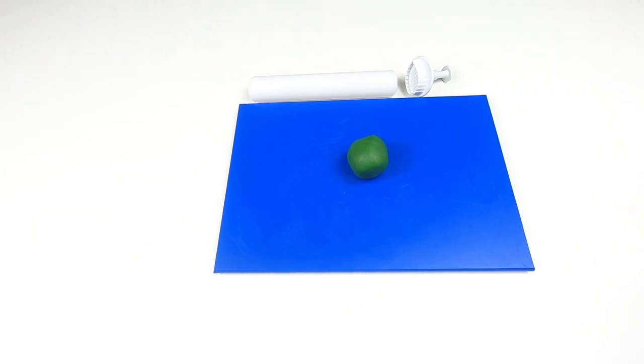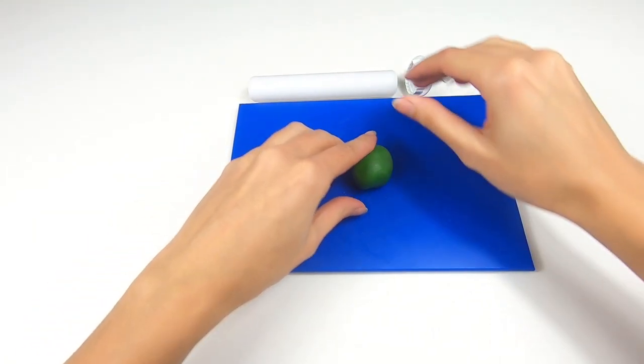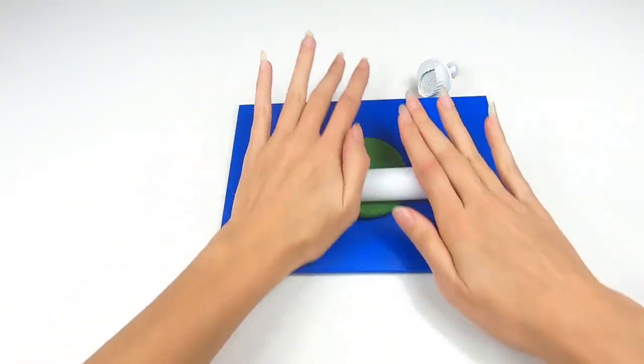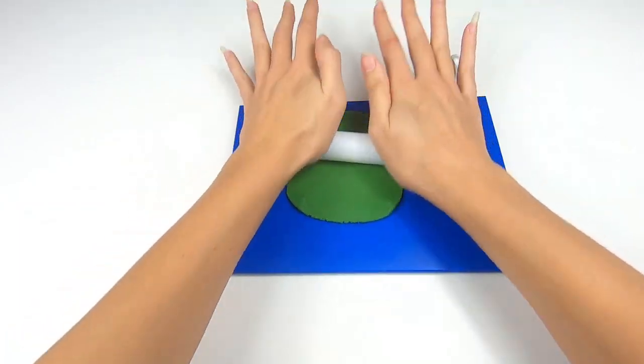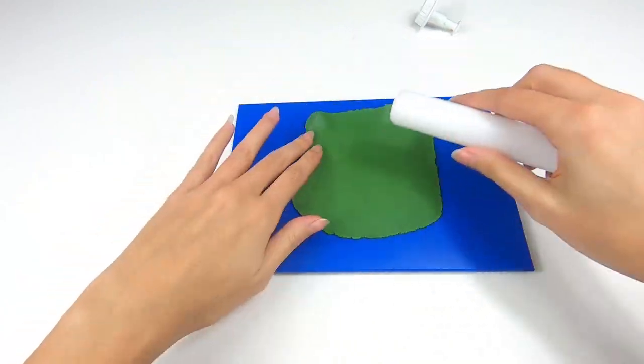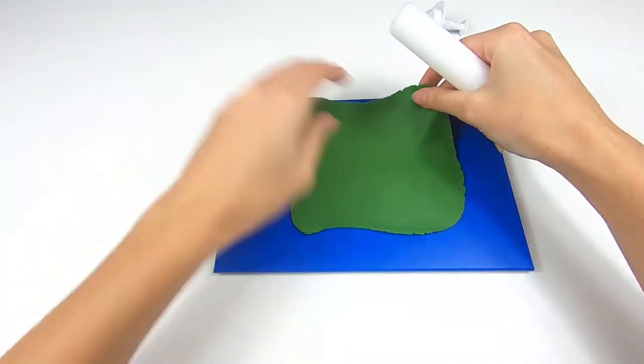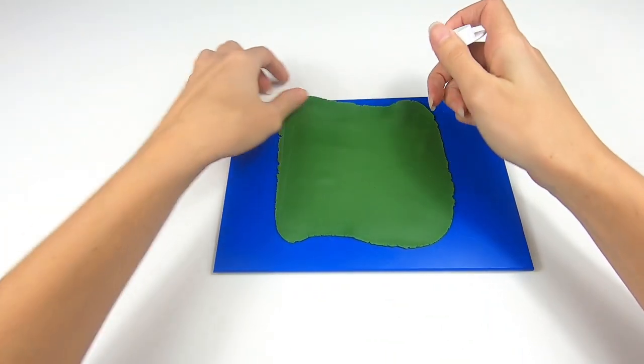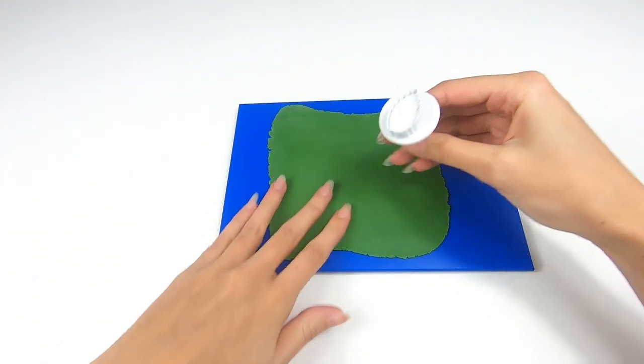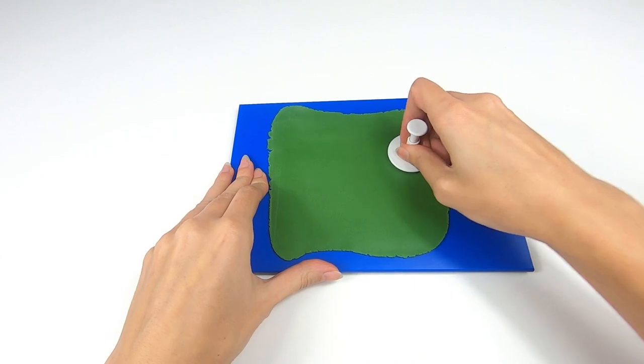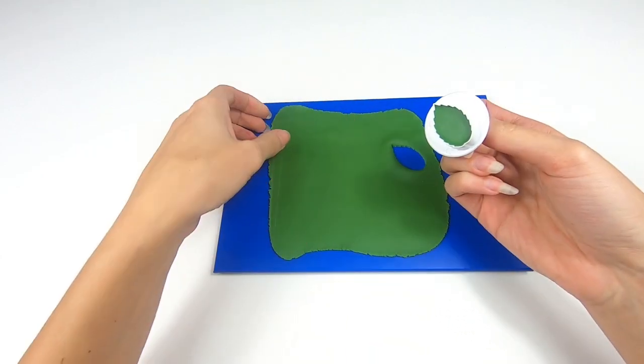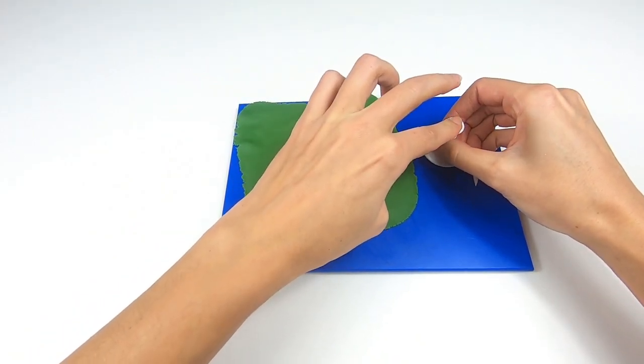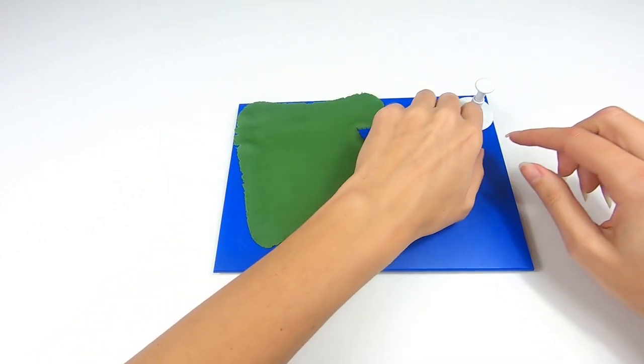We are going to start off by making our edible leaves. You want to take some of your green colored modeling paste and roll that out to about a millimeter thick. Once that's rolled out, take your leaf plunge cutter and cut out the pieces. Make sure when you put it down you really push hard on the plunger to make sure that all of the detail in the leaf comes out.